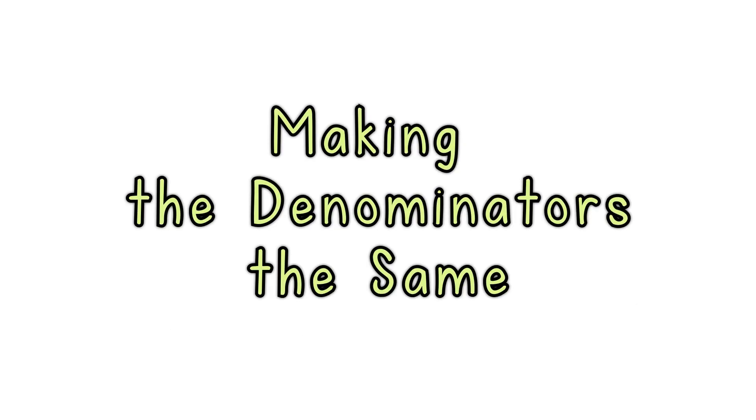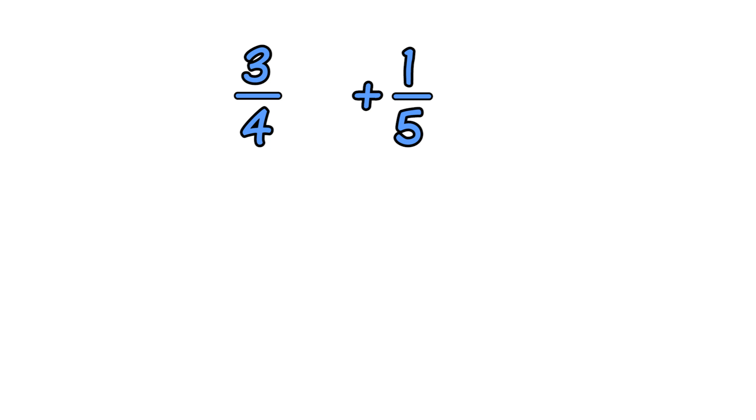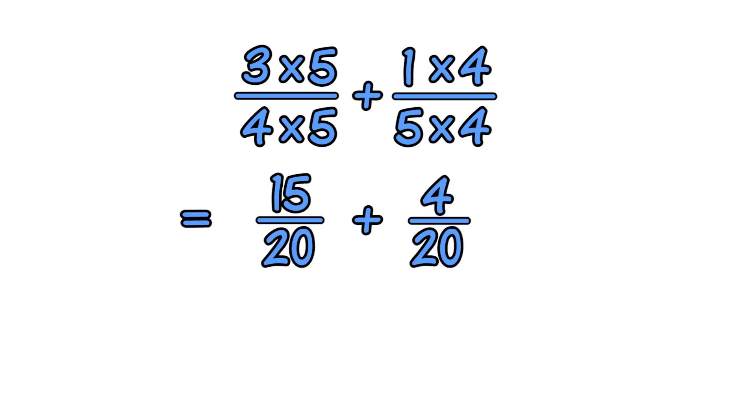Making the denominators the same: The easiest way to make them the same is to multiply the top and bottom of each fraction by the denominator of the other. The denominators are now both 20.